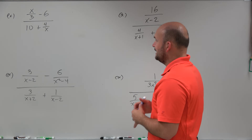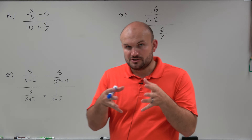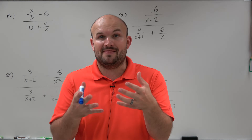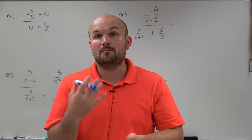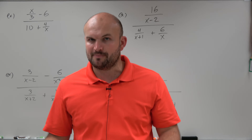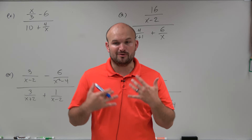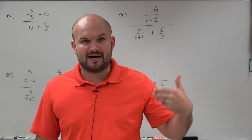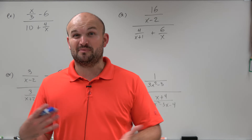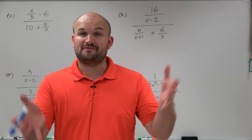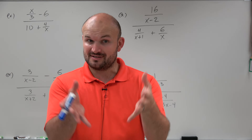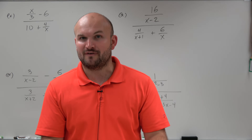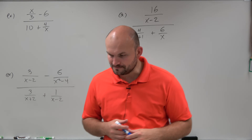There are two ways we could do this. The first way is we could combine our terms so we have a common numerator and denominator, and then simply divide them by multiplying by the reciprocal. If you're comfortable with multiplying by the reciprocal, that's fine. The only problem is you have to add and subtract the terms first, combine them, and then divide the two fractions — so it's a little bit of extra work.